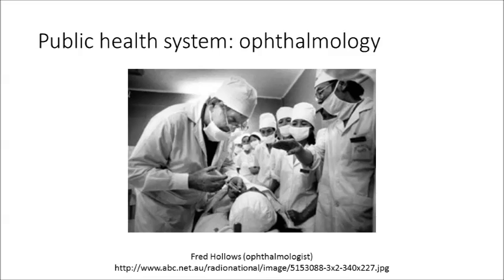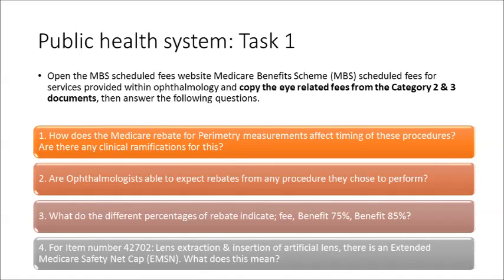The next task will help you find out more about these items. You will look at one specific example — perimetry or visual field testing — to review how Medicare may influence clinical services. Open the scheduled fees website for the Medicare Benefits Scheme MBS for services provided within ophthalmology, and copy or have a look at the eye-related fees from the category 2 and 3 documents.